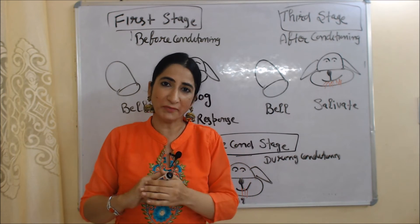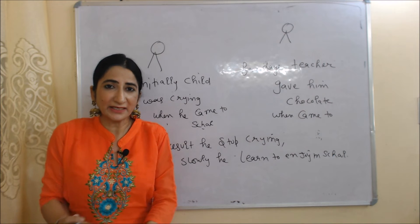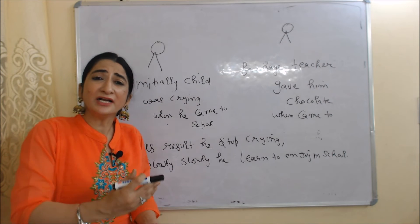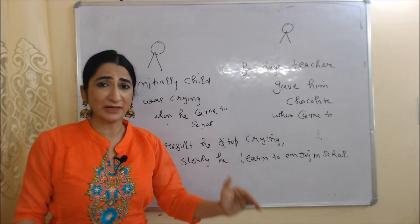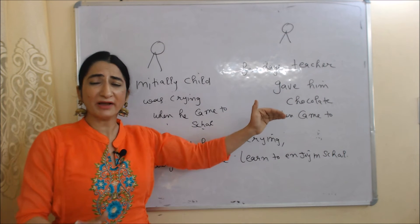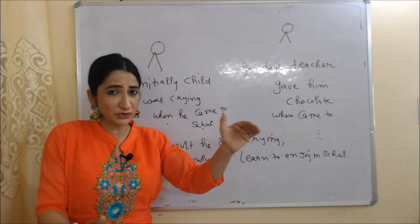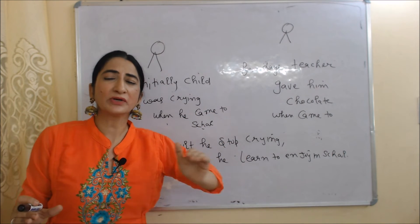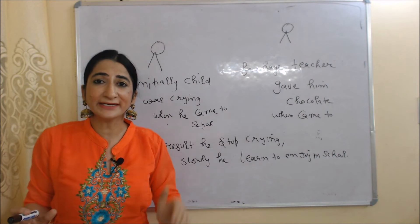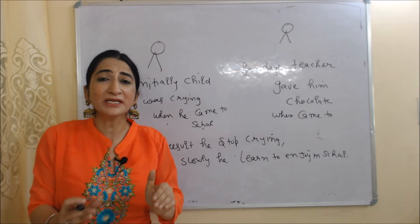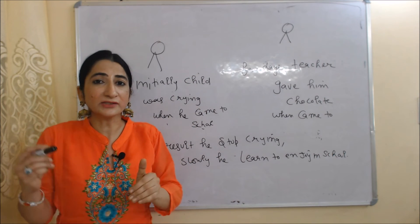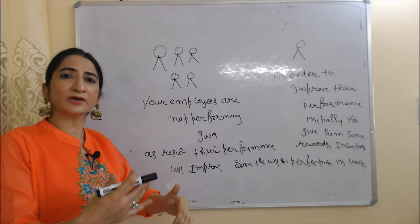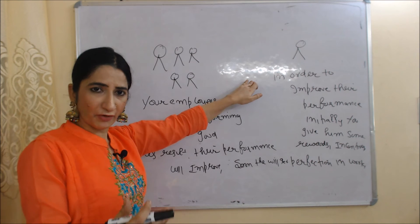Now we will understand this theory with the help of some real life examples. Initially, a child was crying a lot when he came to school. That's why, for the first few days, his teacher gave him chocolate when he came to school. As a result, he stopped crying; slowly he learned to enjoy school. Now he doesn't cry even when his teacher is not giving him chocolate. This is called learning through conditioning of the mind.